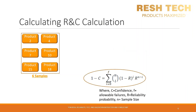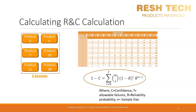Let's take a look at the binomial equation. Using a 90% confidence level and plugging in different values for reliability and allowable failures generates a table of reliability percentages and allowable failures at a 90% confidence level. As you can see, this is very similar to the LTPD table discussed earlier.